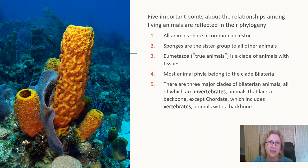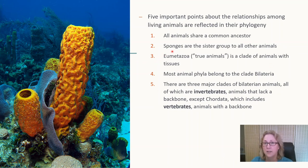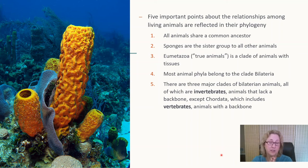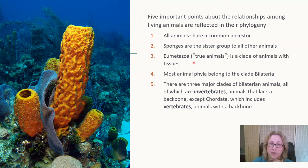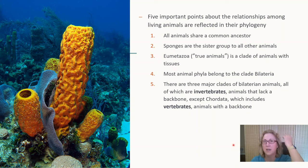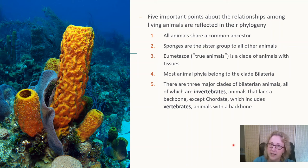Sponges are the most primitive animals — probably the first animals — and at the DNA level they are the sister group to all other animals. All other animals are called the Eumetazoa, or 'true animals,' because sponges don't really have true tissues the way other animals do. They have a few specialized cells, but not true tissue types — they lack true endoderm and ectoderm.